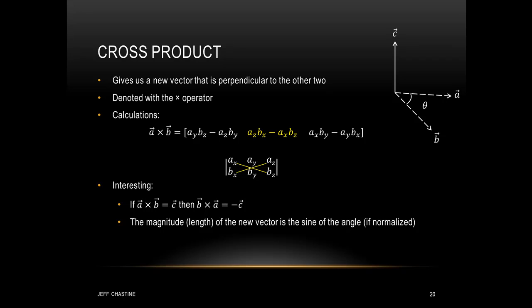There are some interesting properties of the cross product. If a cross b gives you c, then b cross a gives you negative c. Another fact is that the magnitude of the resulting vector c is the sine of the angle between a and b — assuming that a and b are normalized.